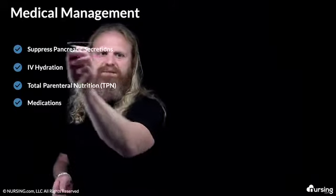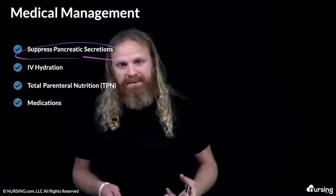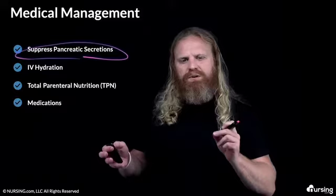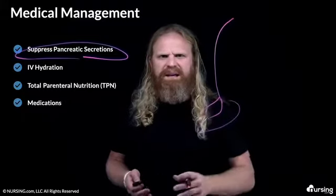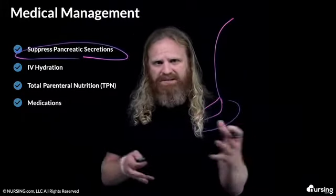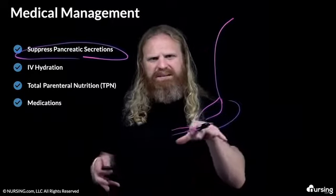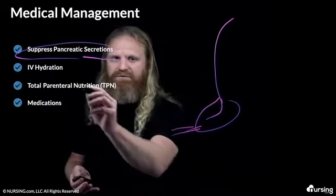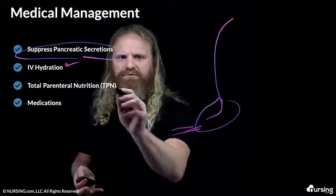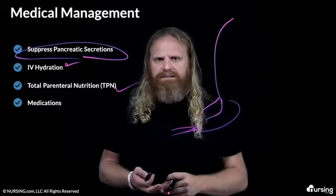Our number one goal with medical management is to decrease or suppress the amount of enzymes the pancreas secretes to limit autodigestion. If we don't decrease what's going out, all these enzymes are going to start working back on the pancreas and digesting it. We're also going to make the patient NPO and may put in an NG tube to help decrease gastric acid secretion, which means less pancreatic secretions. We'll ensure hydration and may start total parenteral nutrition, with nutrients going into the venous system.